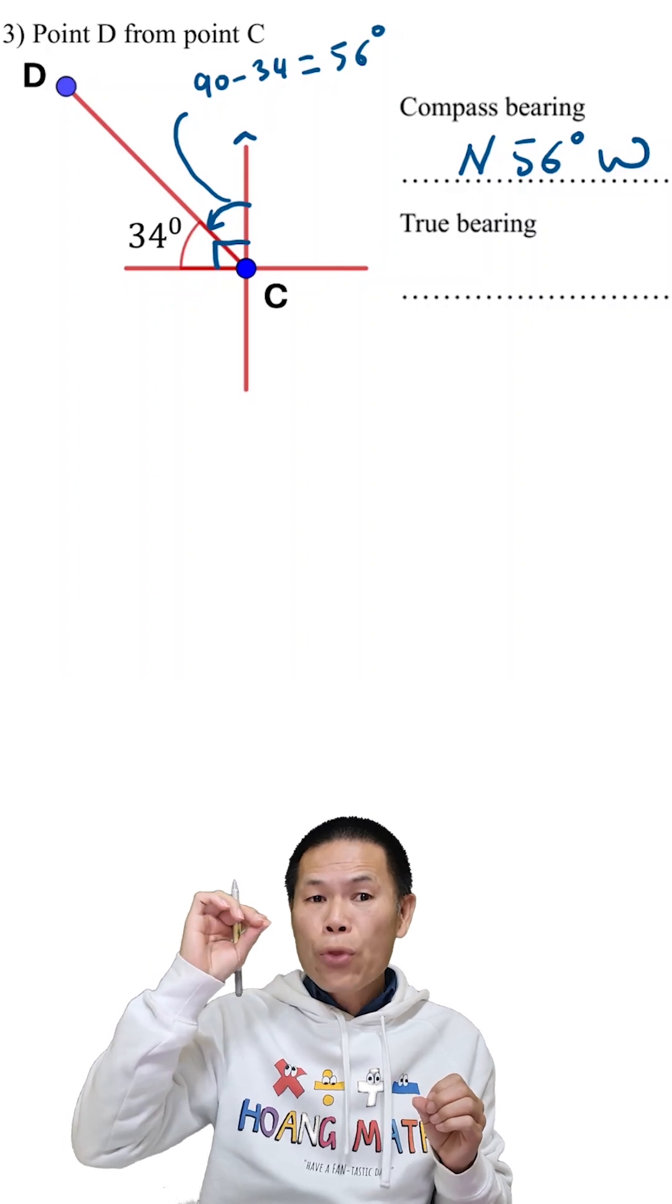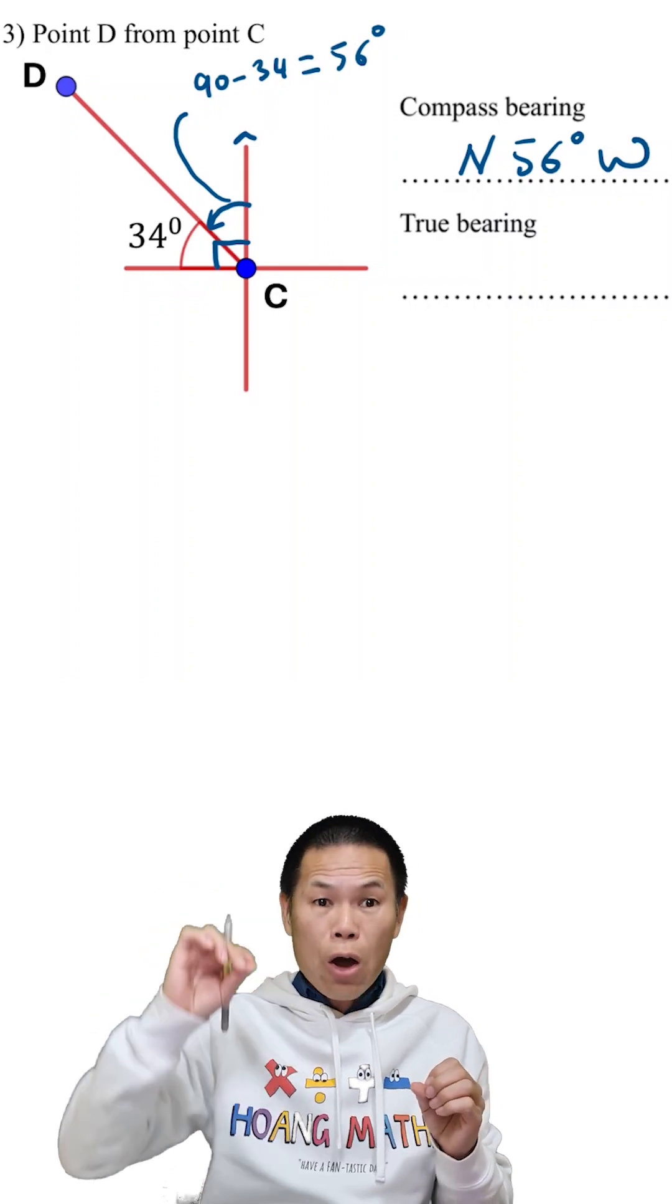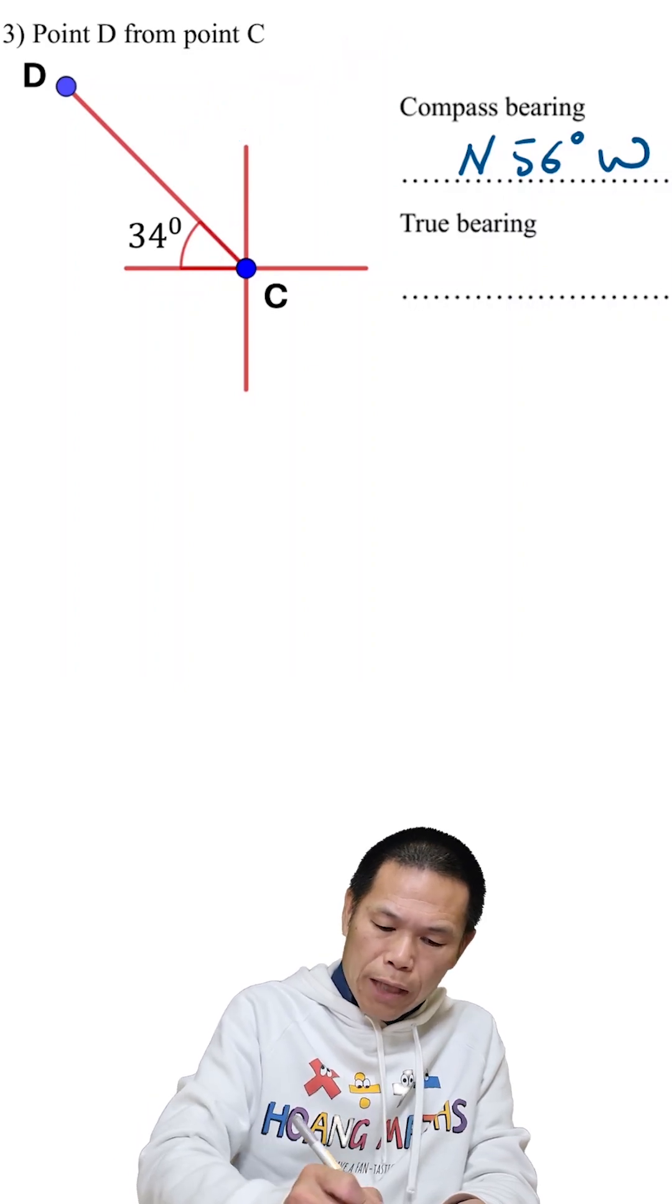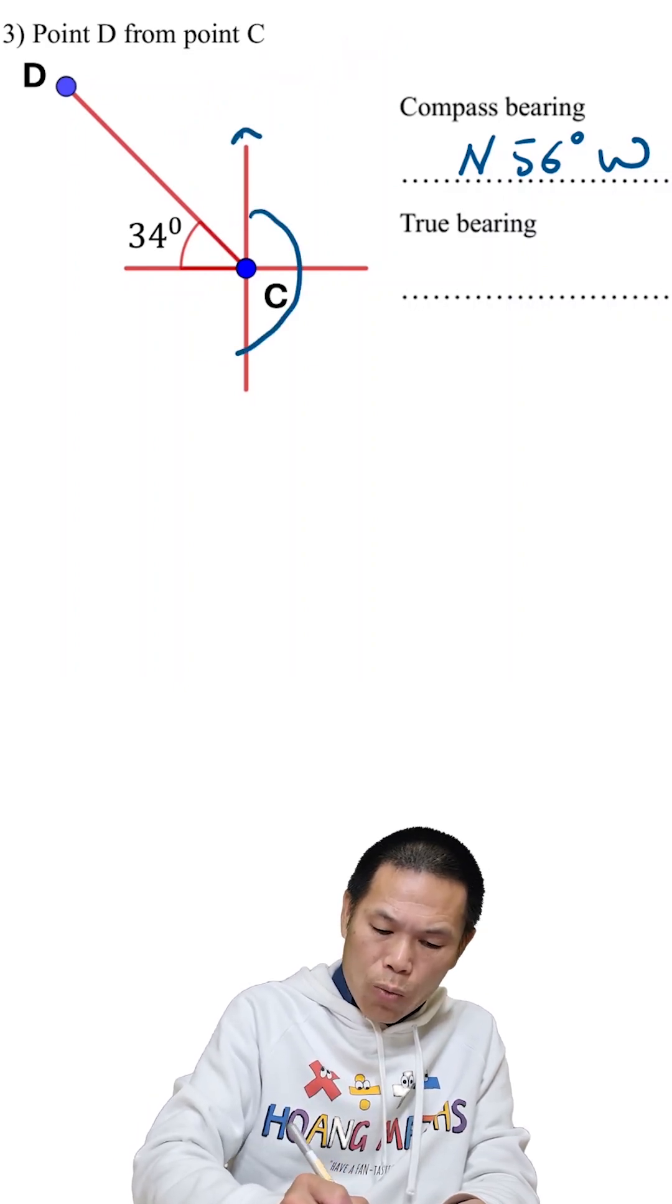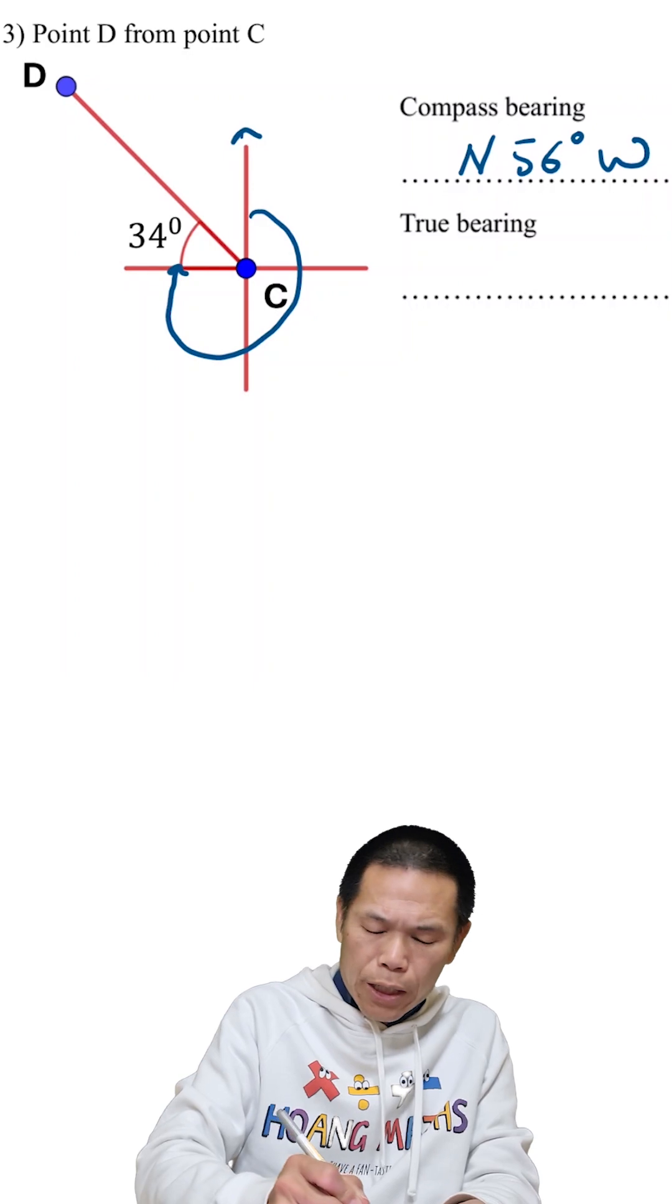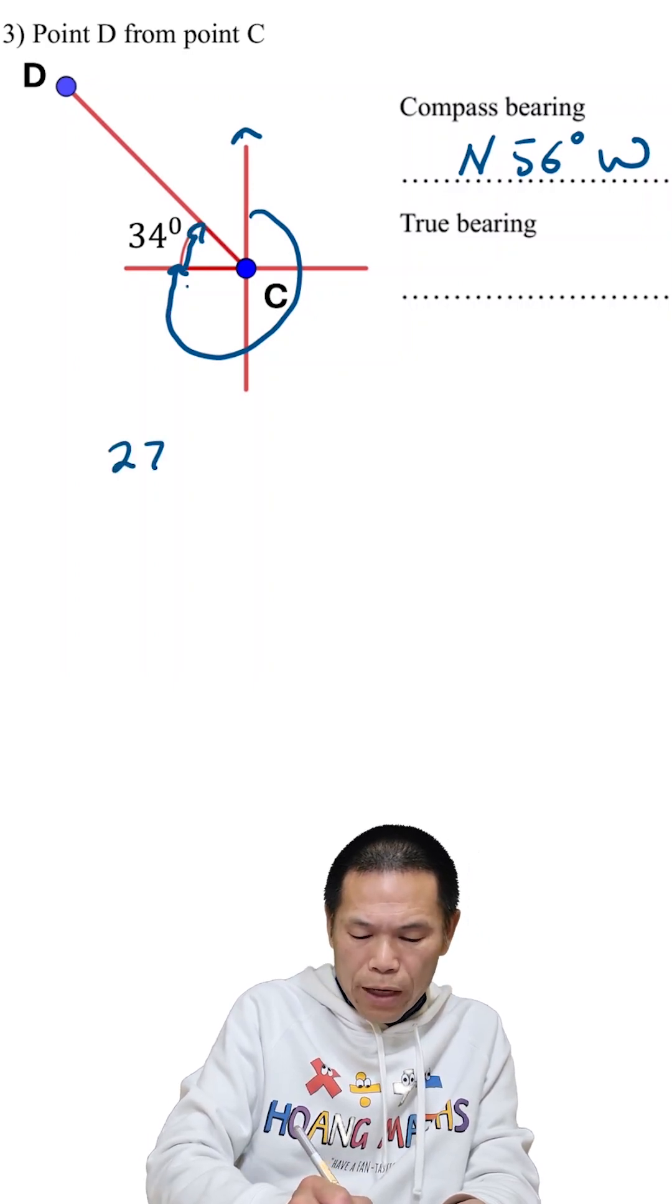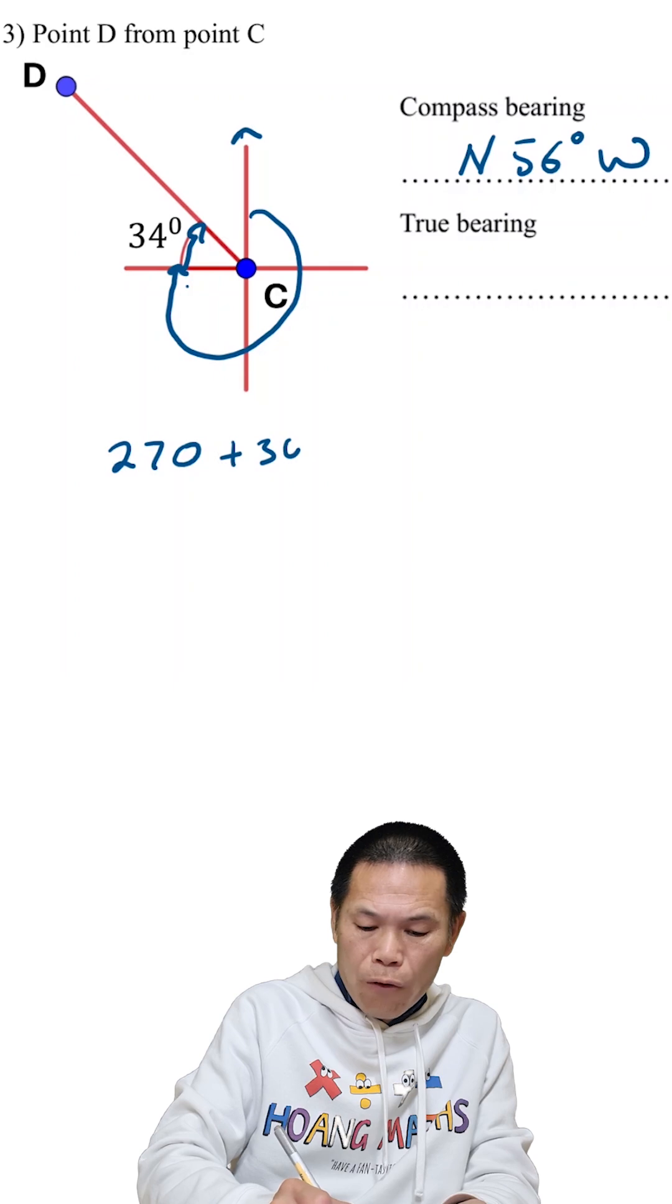we always start from north and go clockwise. So we start at north and go clockwise. From here to here is 270, and we add 34, so 270 plus 34,